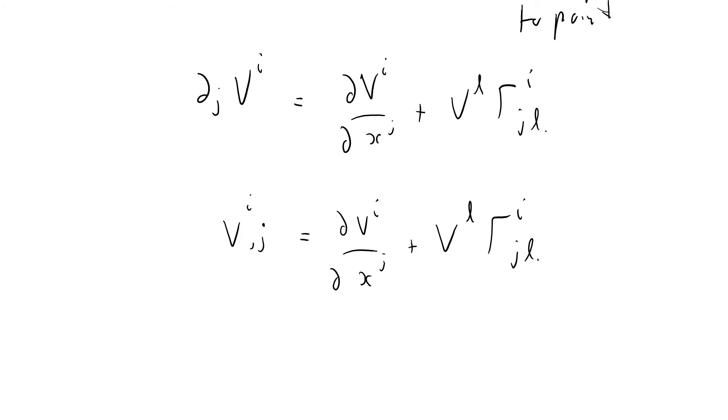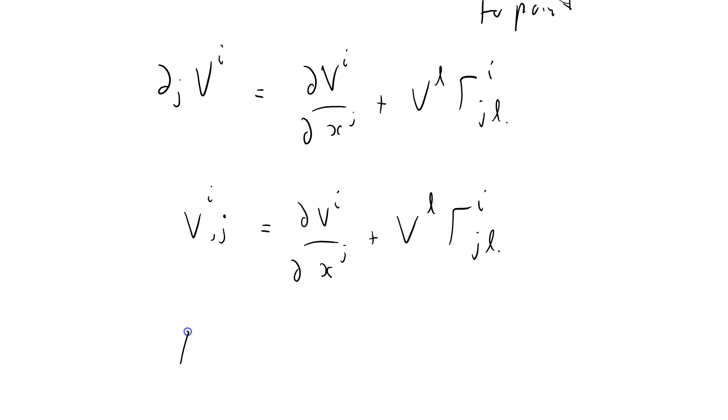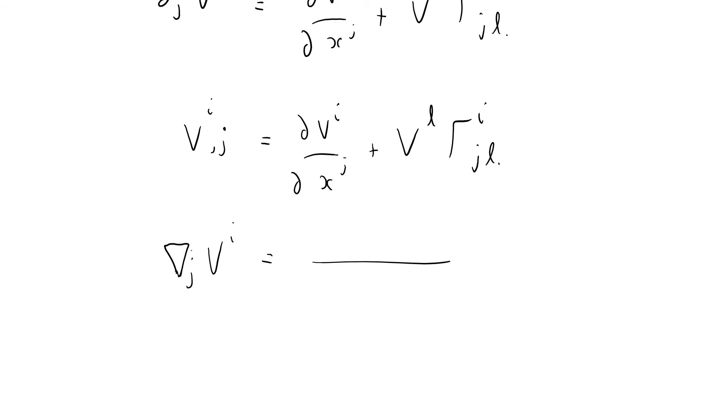I'm going to write down the same equation in different notation. I have seen that ∇_j v^i equals the same thing. The one that's, I guess, most common is this. v^i with a semicolon j equals v^i with a comma j plus the Christoffel symbol stuff Γ^i_jl.